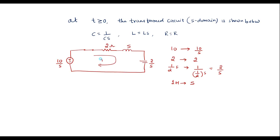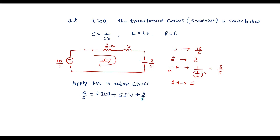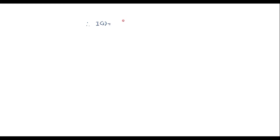Now let me apply KVL to this circuit. Applying KVL, I can write: 10/s equals the drop across the 2-ohm resistor, which is 2·I(s), plus s·I(s) for the inductor, plus (2/s)·I(s) for the capacitor. Taking I(s) common, we get 10/s = I(s) · (2 + s + 2/s).